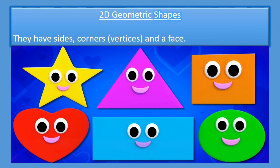You may know some other shapes that you have learnt in Grade R and at the start of Grade 1. Some of these shapes you know very well: you have a star, heart, oval and diamond shape. These are in addition to our triangle, square, circle and rectangle. 2D geometric shapes have sides, corners and a face with a surface of the shape.